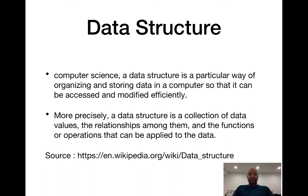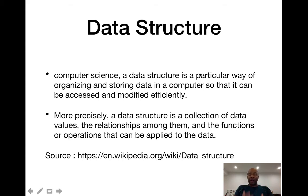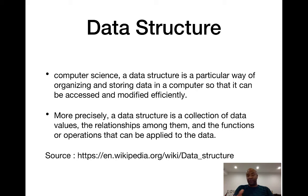We now need to define what a data structure is. The formal definition says: in computer science, a data structure is a particular way of organizing and storing data in a computer so that it can be accessed and modified efficiently — and 'efficiently' is very important. An extension of that: a data structure is a collection of data values, the relationships among them, and the functions or operations that can be applied to the data. That definition comes from Wikipedia.